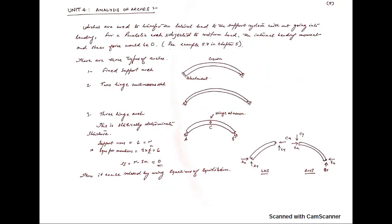Next is analysis of arches. Arches are circular beam or truss structures that don't bend under load — they effectively transfer the load sideways. There are three common types: fixed support arch (fixed supports), two-hinge arch (pin supports at both ends), and three-hinge arch (two pin supports plus one internal hinge). The fixed support arch and two-hinge arch are indeterminate, but the three-hinge arch is determinate and can be analyzed using equilibrium equations.